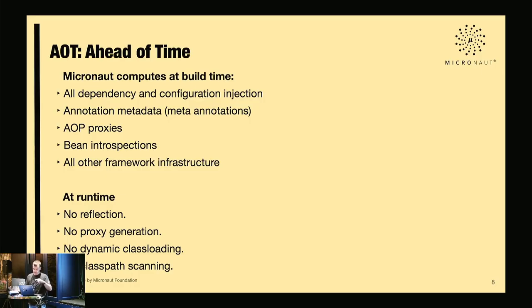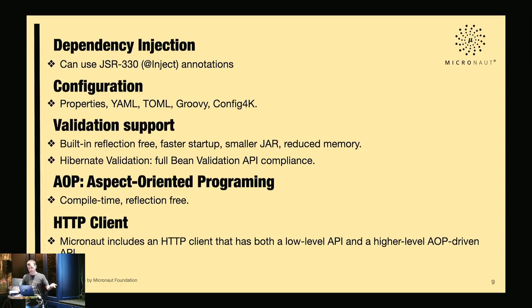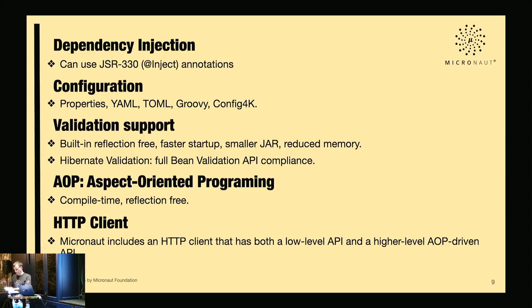Doing as much as possible at compile time means lower memory consumption and faster startup — not just in production but also day-to-day, so running a functional test with Micronaut is basically instant. At its core is also a dependency injection engine supporting JSR-330 annotations: @Singleton, @Inject. Configuration injection supports properties files, YAML, TOML, and Groovy as well as config4k.